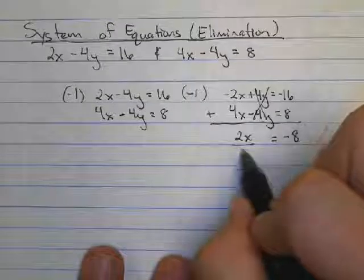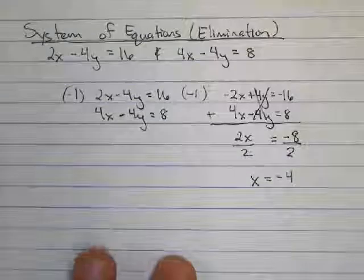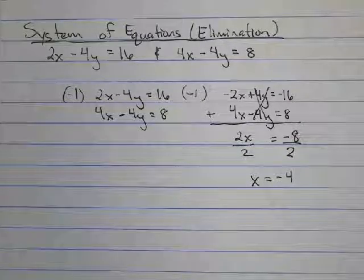Now I just divide out the two and we get x equals negative 4. But I'm not done with the problem yet. I have to go back substitute x in and then solve for y.